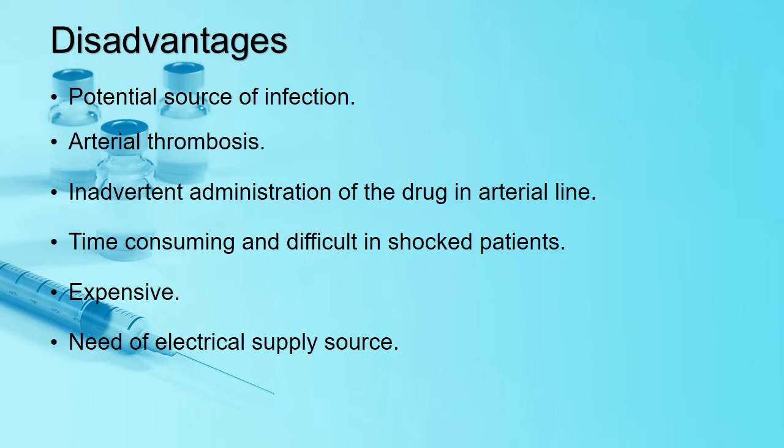It has some disadvantages as well. The most important one is infection. Another is thrombosis — if thrombosis occurs in that artery, the blood supply to the limb can be damaged and can even lead to amputation of that limb. Be aware of this complication. Inadvertent drug administration is also possible if someone unfamiliar with the arterial line accidentally gives a drug through it, which can lead to disastrous effects. It is also time-consuming and difficult in shock patients because of poor peripheral perfusion.